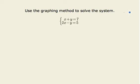Use the graphing method to solve the system x plus y equals 7, 2x minus y equals 5. To use a graphing method to solve a system, what we'd like to do is graph each of these two equations and see if those graphs intersect. If they do, then wherever they intersect is a solution to our system.